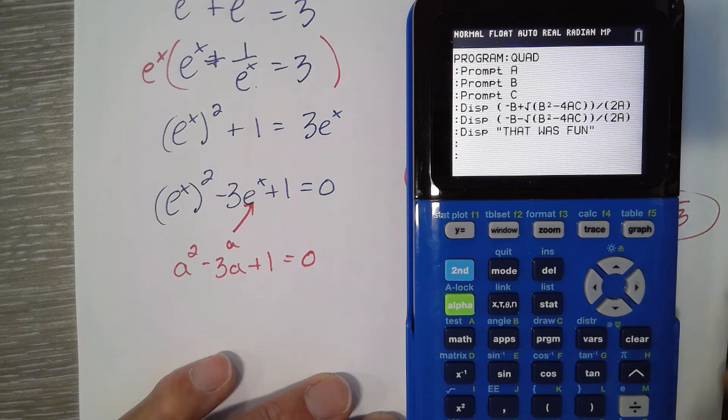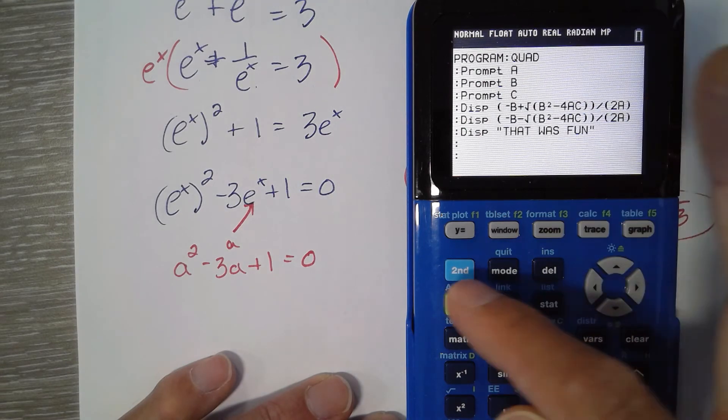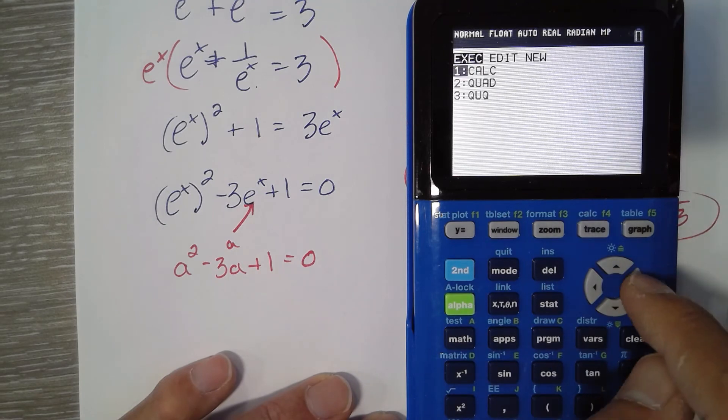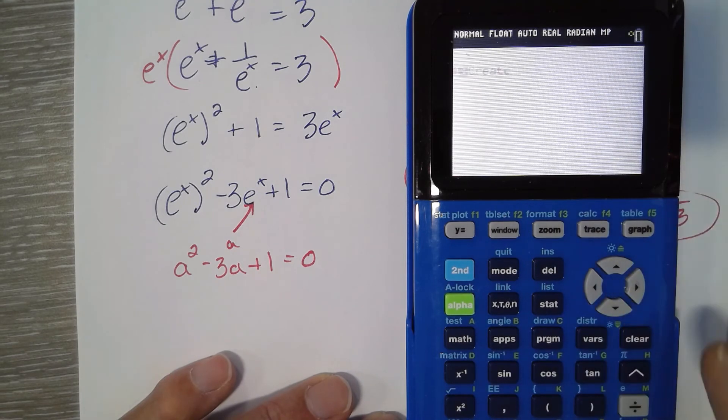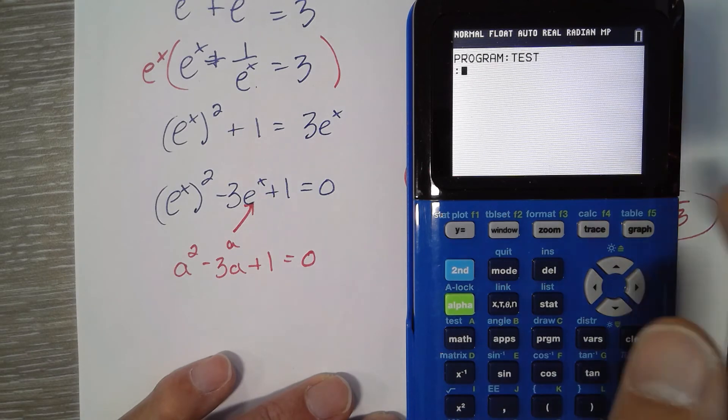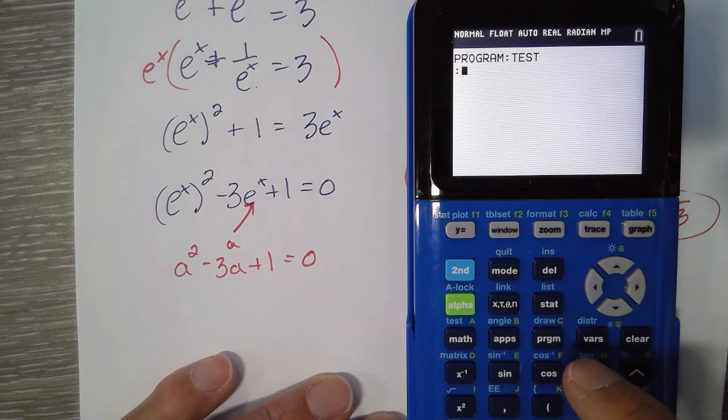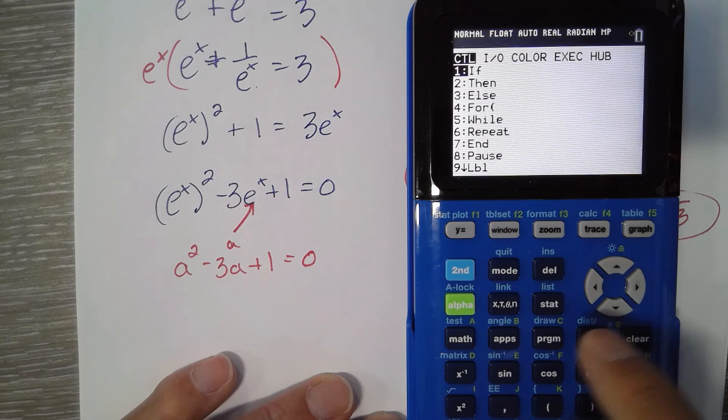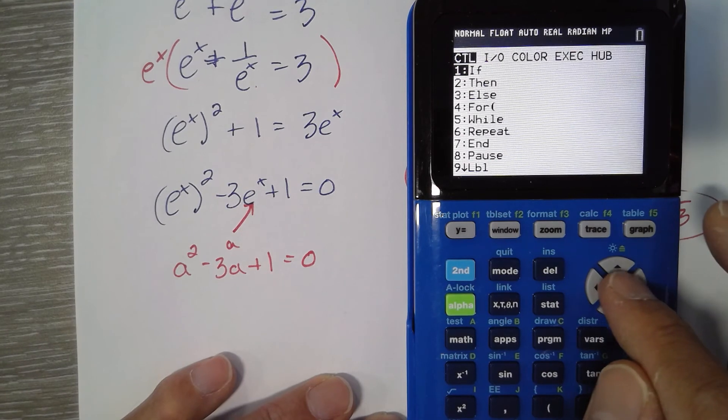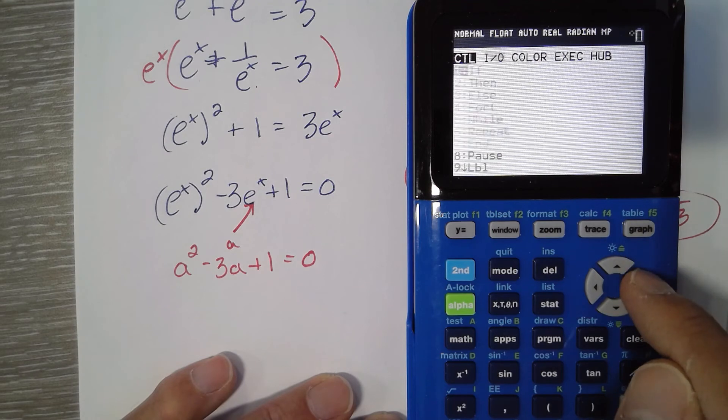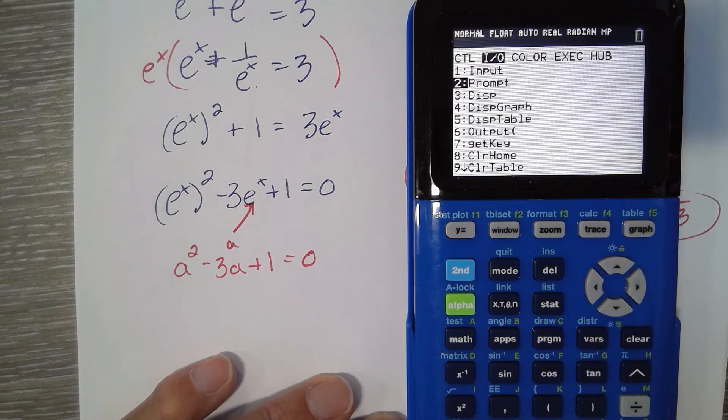Okay. So to find prompt, you're going to want to go to program, edit. I'll just do a new one. So to find prompt, you're going to hit program again, and there's a whole bunch of programming language you can use. So program, edit, and then program again, and then input, output is where you find prompt.